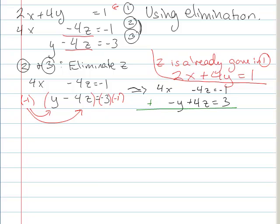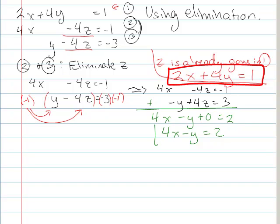So now I'm gonna add it straight down, get 4X minus Y plus 0 equals 2. So I have 4X minus Y equals 2. So now I have two equations. I have this one and I have this one.